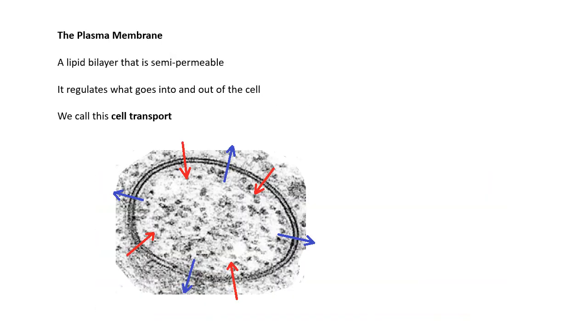Basically, it's how stuff gets in and out of cells, and it does that by going through the plasma membrane. What is the plasma membrane? It's a lipid bilayer, and it is semi-permeable.